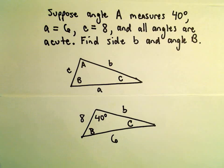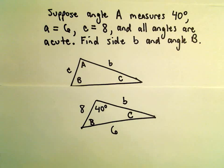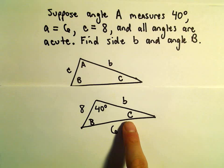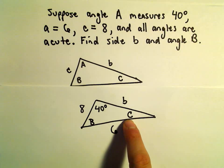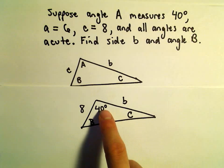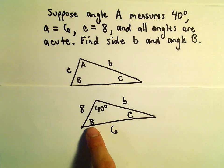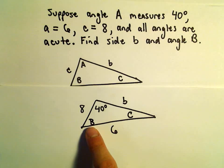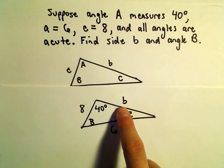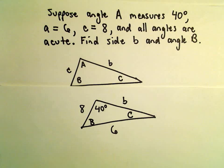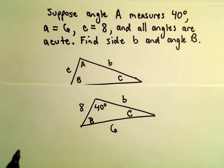What I'm going to do is use the law of sines to figure out angle C. From that, since we know all the angles add up to 180, I'll be able to find the value for angle B. And then I'll be able to use the law of sines again to figure out the value for little b.